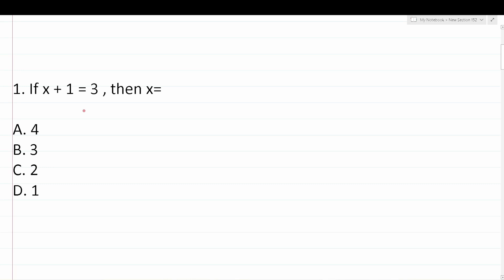Number one says: if x plus one equals three, then x equals. I know this question is very easy and the vast majority of you can solve it without too much work. That said, I want to introduce the idea of plugging in your answer choices using an easy question, so that when we get to the more difficult questions you'll have the concept down. We have x plus one equaling three and we want to know what value of x makes this a true statement.